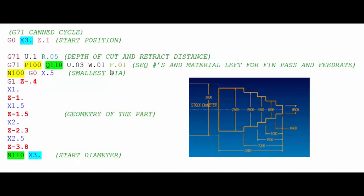So this is where we set all the parameters for our G71 canned cycle and then what we do next is we write the code for our geometry. So the very first line of our geometry starts with a G0 and we tell it what the smallest diameter of the part is. So you can see in our print right here that the smallest diameter is a half an inch or 500 thousandths.